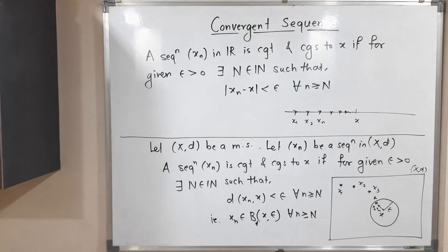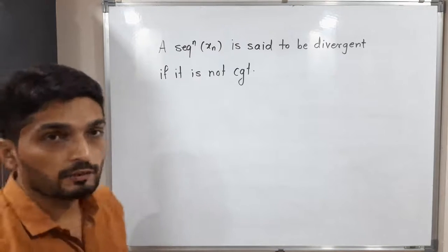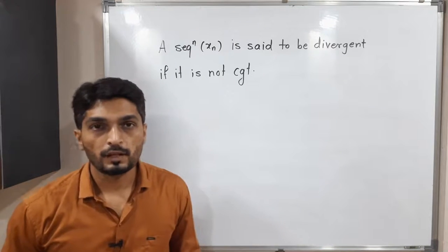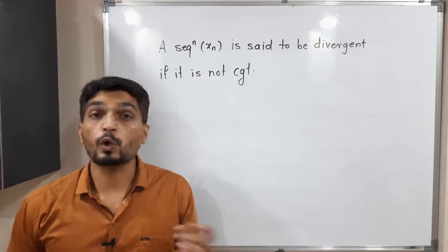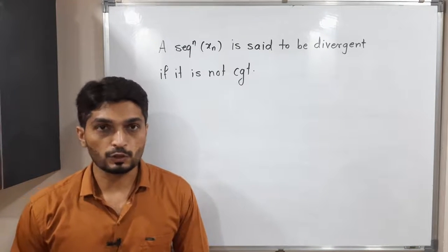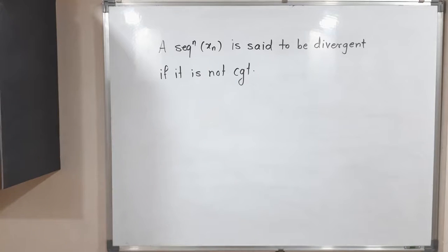Now the concept of divergent sequence can be defined in a very simple way: when we say a sequence is divergent, it means it is not convergent. So we say the sequence is divergent. You can make a screenshot of it. Thank you, bye bye.